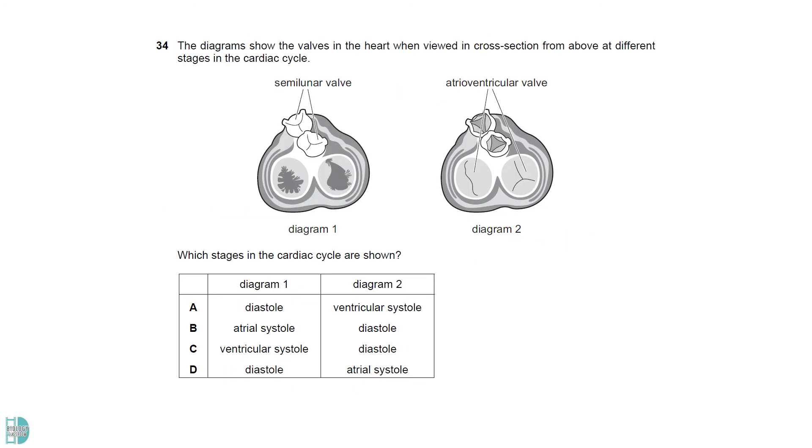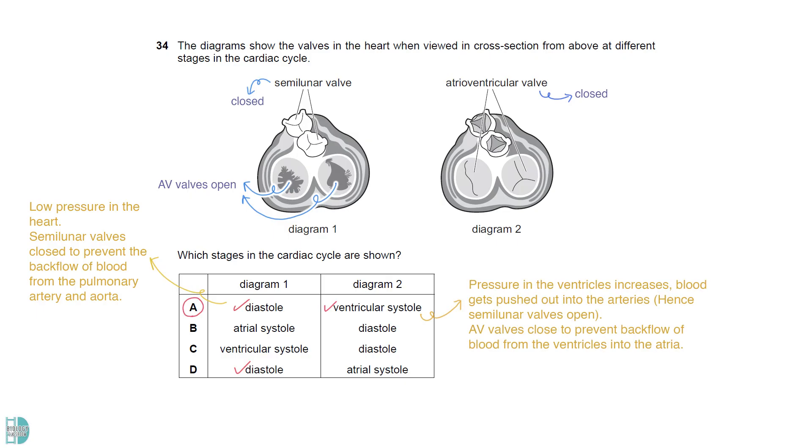In diagram 1, the AV valves open and semilunar valve close. This happens during diastole, which leads to a lower pressure inside the heart. The semilunar valves are closed to prevent the backflow of blood from the pulmonary artery and aorta. In diagram 2, the AV valves are closed. This is because of the ventricular systole, where the pressure in the ventricles increases and blood gets pushed out into the arteries. If AV valves do not close, there will be a backflow of blood from the ventricles into the atria.